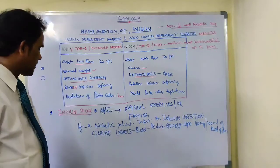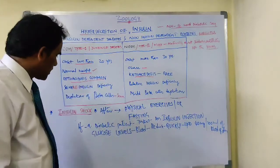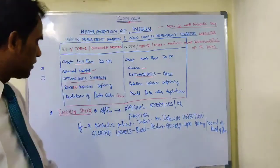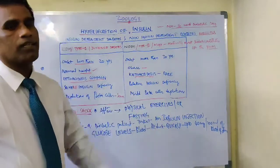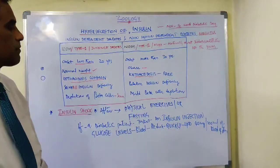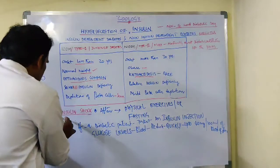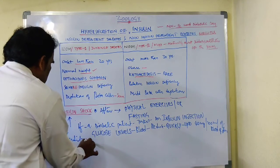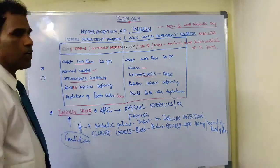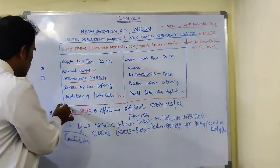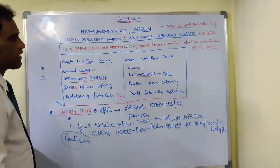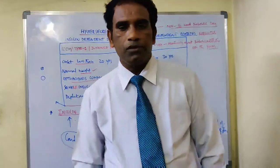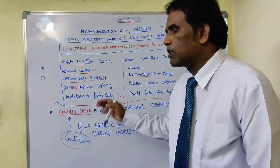So after physical exercises or fasting, if a diabetic patient takes an insulin injection, glucose levels in the blood quickly reduce to 40 milligrams per 100 ml. Due to this insulin shock, the patient may get coma, become unconscious, or may die.